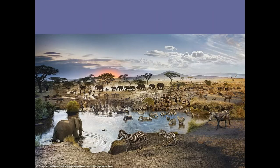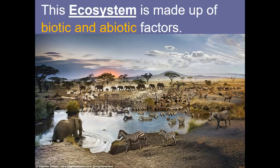This picture has living things like the zebra and elephant, but it also has non-living things. The dirt is non-living, the majority of it is non-living. The water is non-living — there might be living things in the water, but the water itself is not living. So that combination is called an ecosystem.